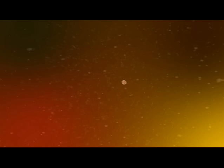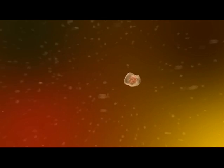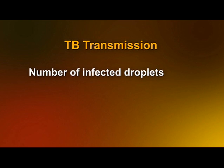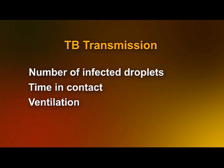TB is usually spread when an infected person coughs and produces small droplets which contain TB bacilli. The droplets remain suspended in the air for hours. When someone breathes in these droplets, he or she can become infected with TB. There are several factors that can affect the likelihood of TB transmission: the number of infected droplets generated by a person with TB, the amount of time a TB-infected person is in contact with others, the amount of ventilation in the area where the exposure takes place, and the immune status of the person exposed.